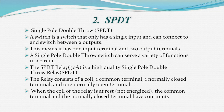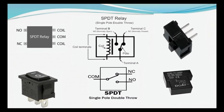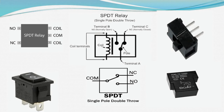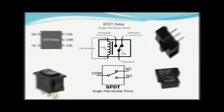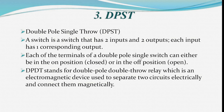When the coil of the relay is at rest (not energized), the common terminal and the normally closed terminal have continuity. DPST (Double Pole Single Throw): a switch that has two inputs and two outputs, where each input has one corresponding output. Each terminal of a double pole single throw switch can be either in the on (closed) or off (open) position.